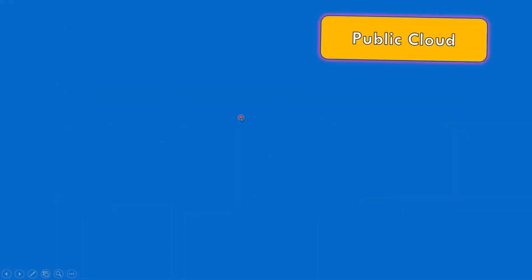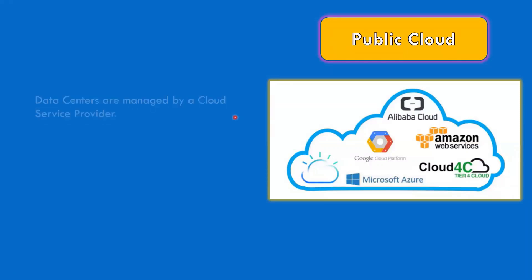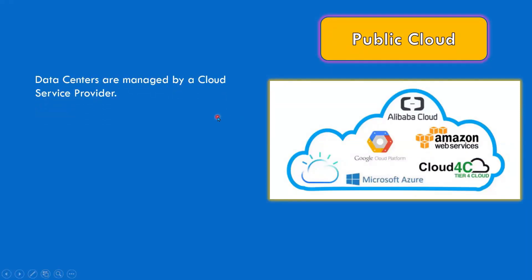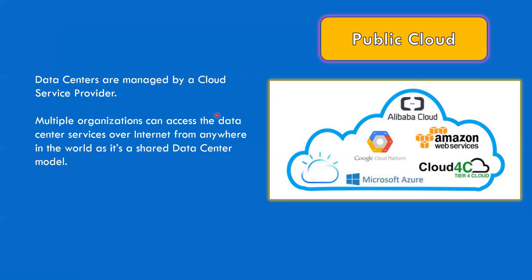If I talk about public cloud — what is public cloud? Public cloud is nothing but data centers which are managed by a cloud service provider where we are going to host our services. In public cloud, any organization can host their data, meaning it is not a dedicated data center. These are shared data centers where multiple organizations can access data or host their services or run their applications over the internet from anywhere in the world. Examples of public cloud are Azure, AWS, Google, etc.